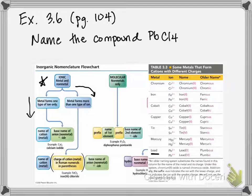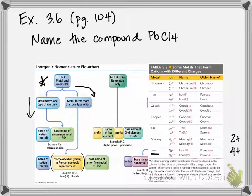Lead can either be in the 2+ or 4+ ionic state. So for our compound, we have to figure out what ion type lead is — is it 4+ or is it 2+? And depending on which one it is, that's going to influence how we name it.